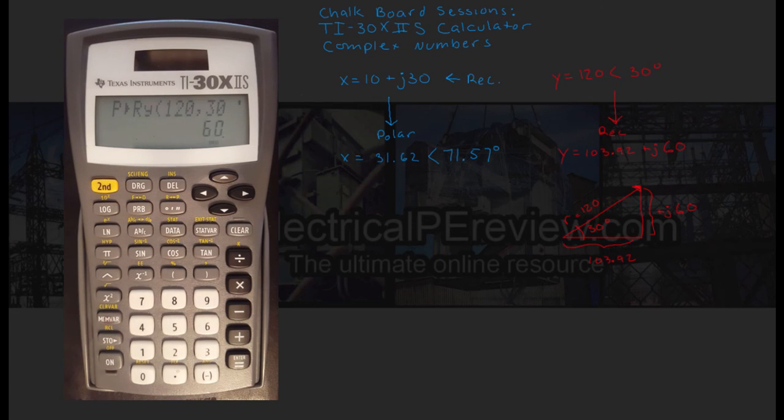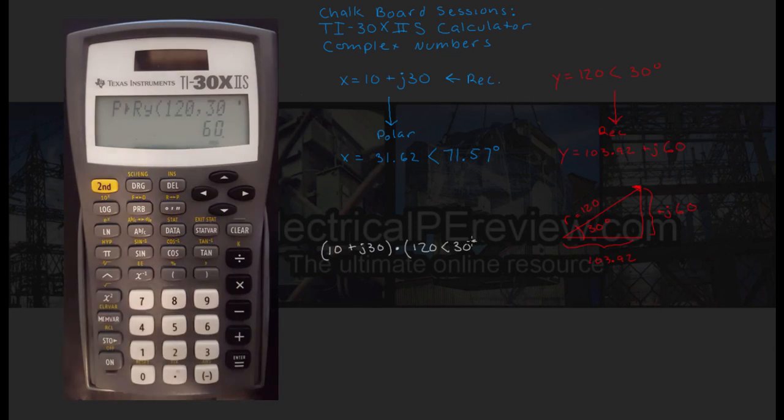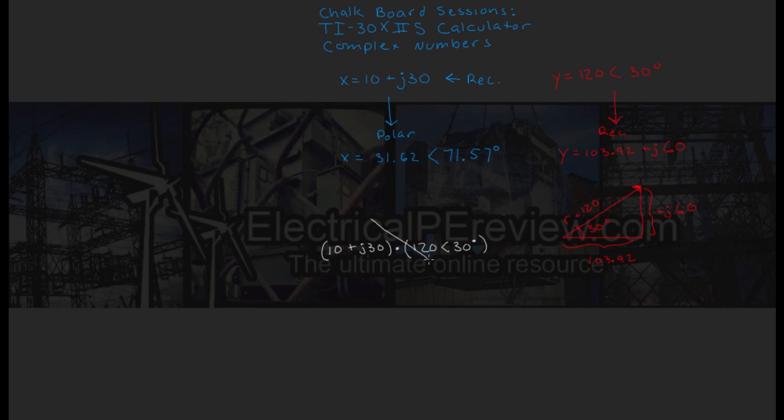Now let's take a minute to talk about the limitations of this calculator. Unfortunately, you can't add and multiply from rectangular to polar. Anytime you're dealing with a formula that calls for one or the other, you're going to have to use the calculator to step its way through and convert to each form that you need for the problem.